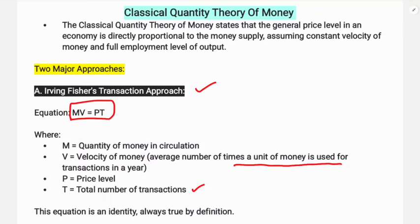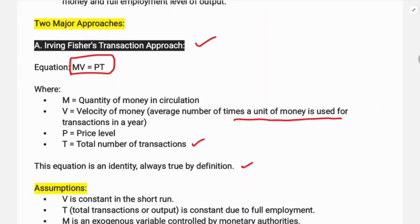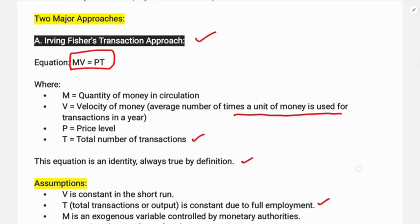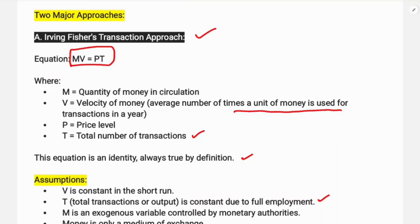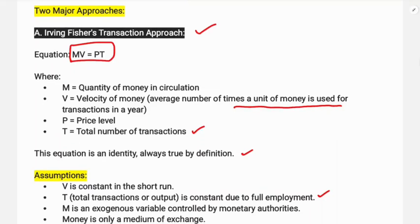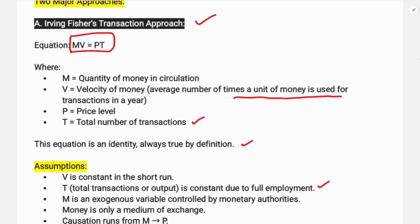This equation MV=PT is an identity, always true by definition. The assumptions are: V is constant in the short run, T is constant due to full employment, M is an exogenous variable controlled by the monetary authority, and money is only a medium of exchange.